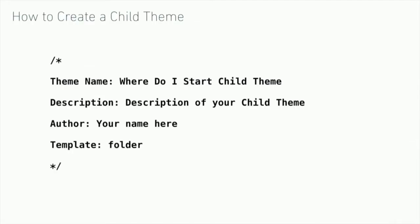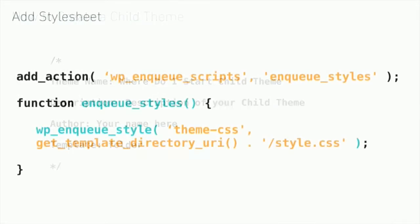Your template can be controlled by folders — this folder would point to the parent theme. You may want to use your parent theme's styles, so if you want to use the style sheet, you can enqueue it. You'd do this in your functions.php file, and this can be done for the parent style sheet or any other style sheets used in your theme.